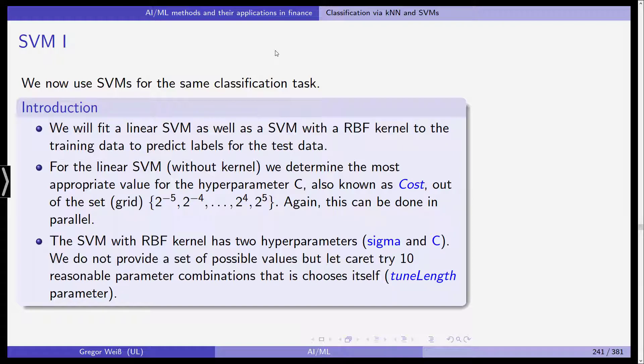We are going to use support vector machines to achieve the same results, almost the same results as the k-nearest neighbor classifier in the context of predicting customer churn. We will fit a linear SVM as well as a support vector machine with a radial basis function kernel to the training data on customer churn in the credit card data sample. We are going to predict the labels for the test data, that is contract termination or no termination.